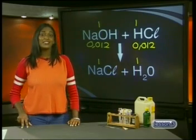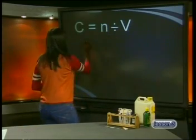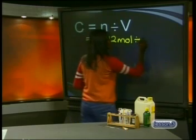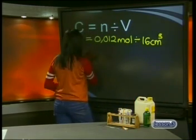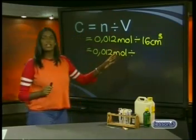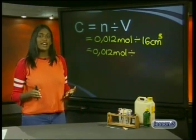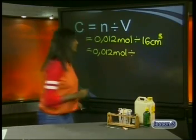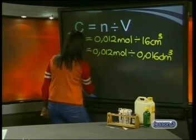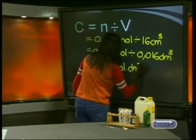Step 5: Calculate the concentration of the unknown using C equals N divided by V. Our number of moles is 0.012 mol, divided by our volume of 16 cm³. Remember to change the unit of volume from cm³ to dm³, like we did in step 3. We do this by dividing 16 cm³ by 1,000, which gives us 0.016 dm³. We then get an answer of 0.75 mol·dm⁻³.